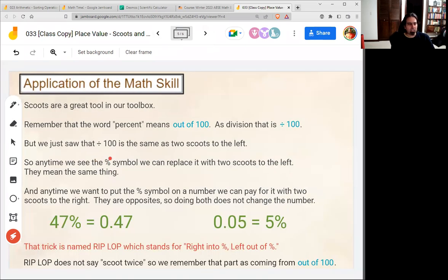So when we see the percent symbol, we can think that's 47 out of 100. That's 47 divided by 100. And what is that? That's 47 with two scoots, one, two, to get 0.47. So we can change a percent into the decimal format for the same amount with two scoots to the left.